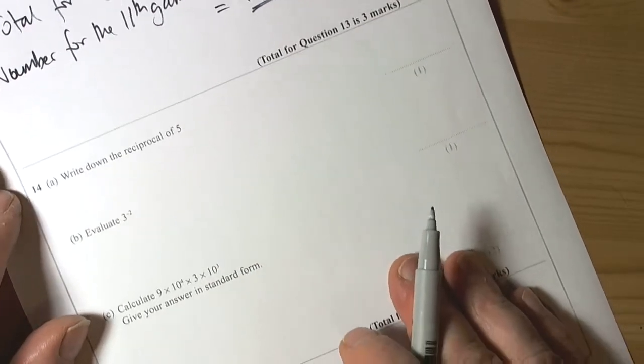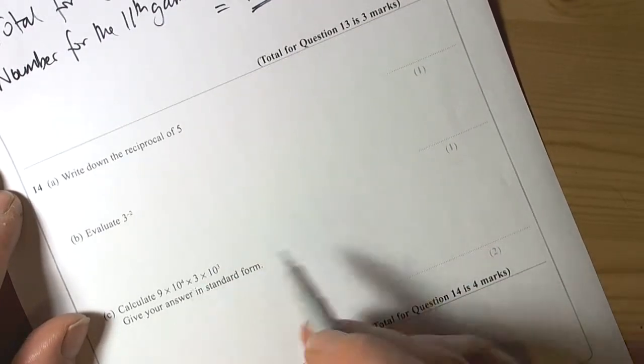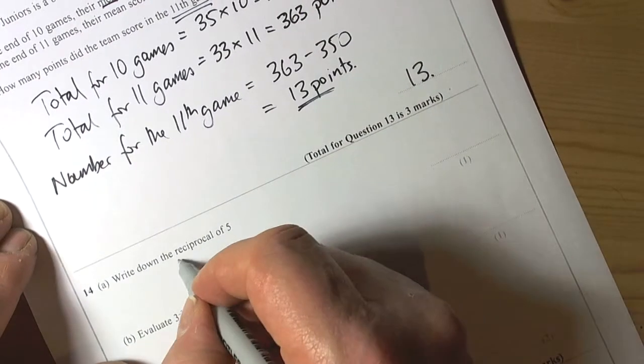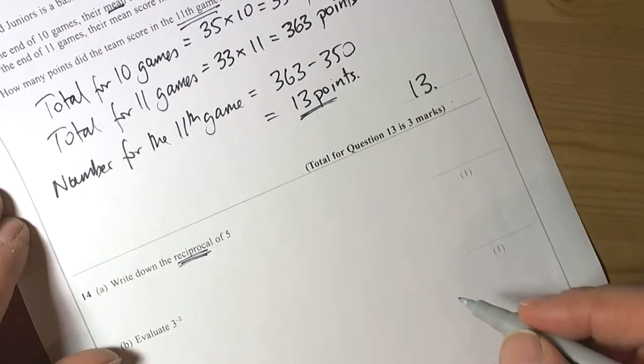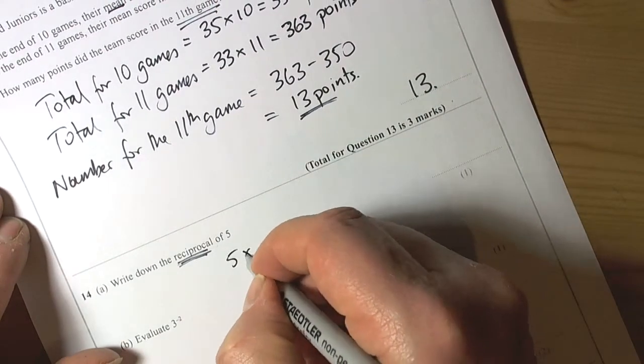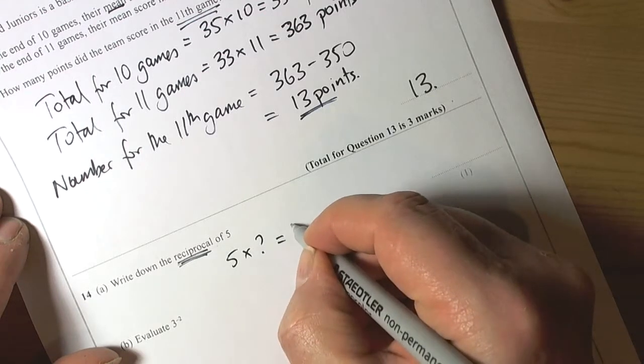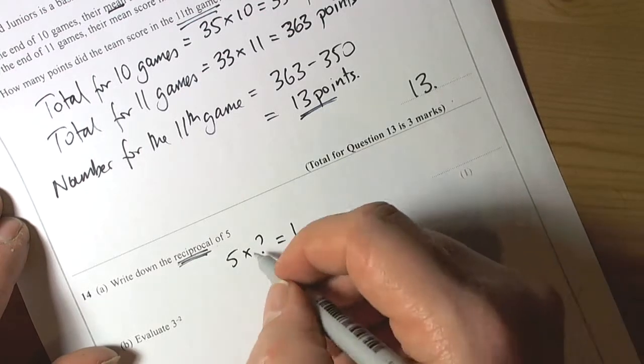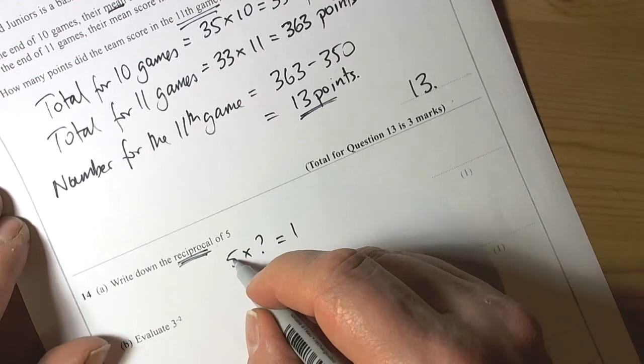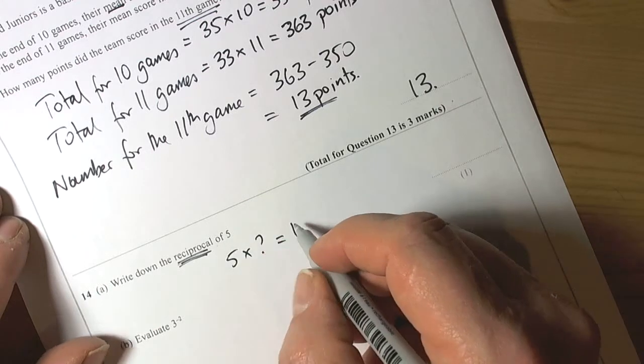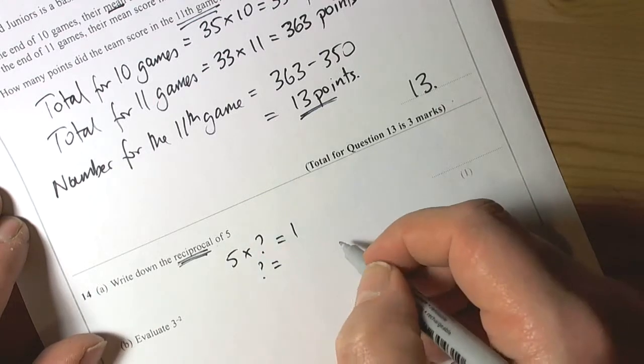Standard form is another form of writing numbers in powers. For reciprocal, when you've got the reciprocal of a number, we're looking at five times something that gives us an answer of one. The reciprocal always multiplies by what it is and gives an answer of one.